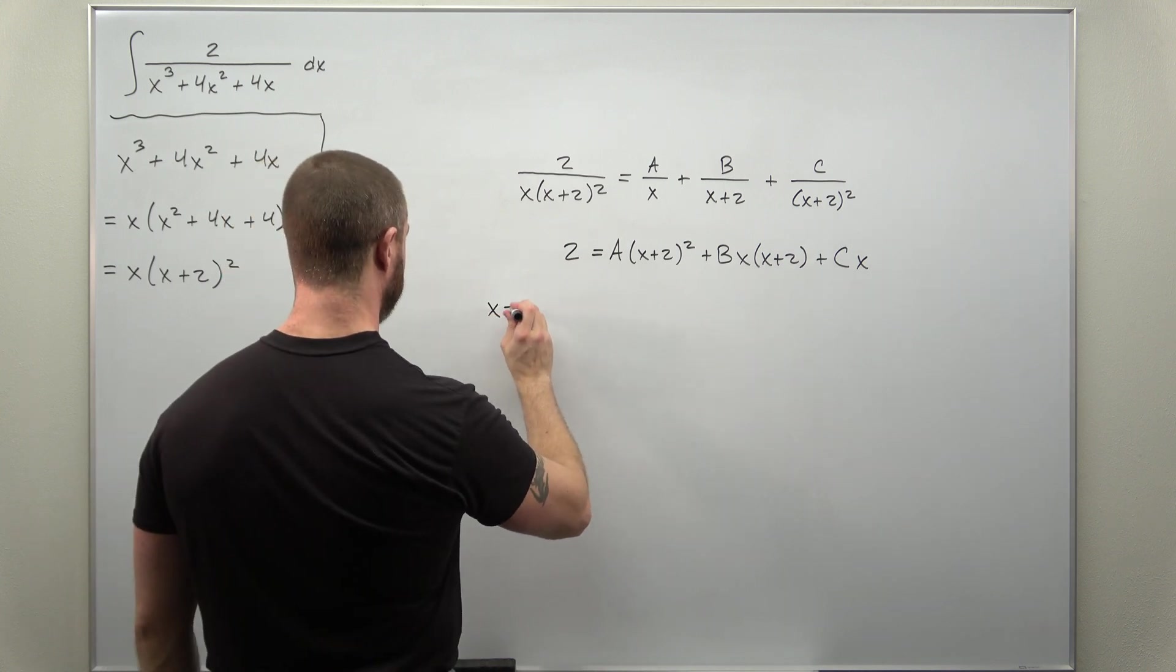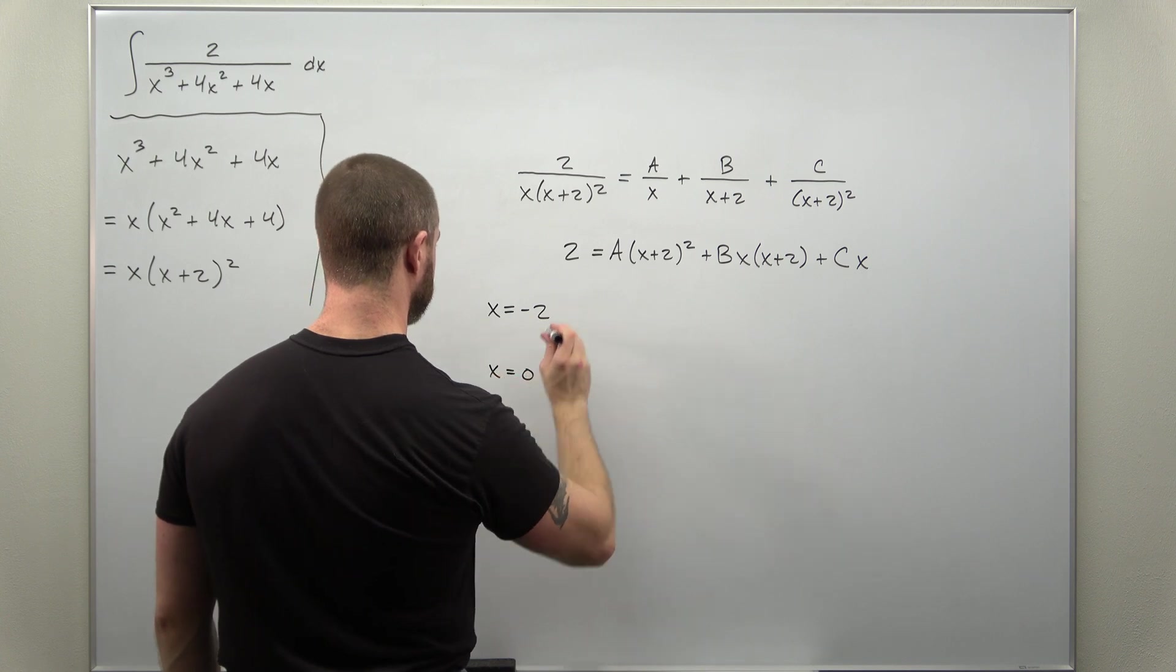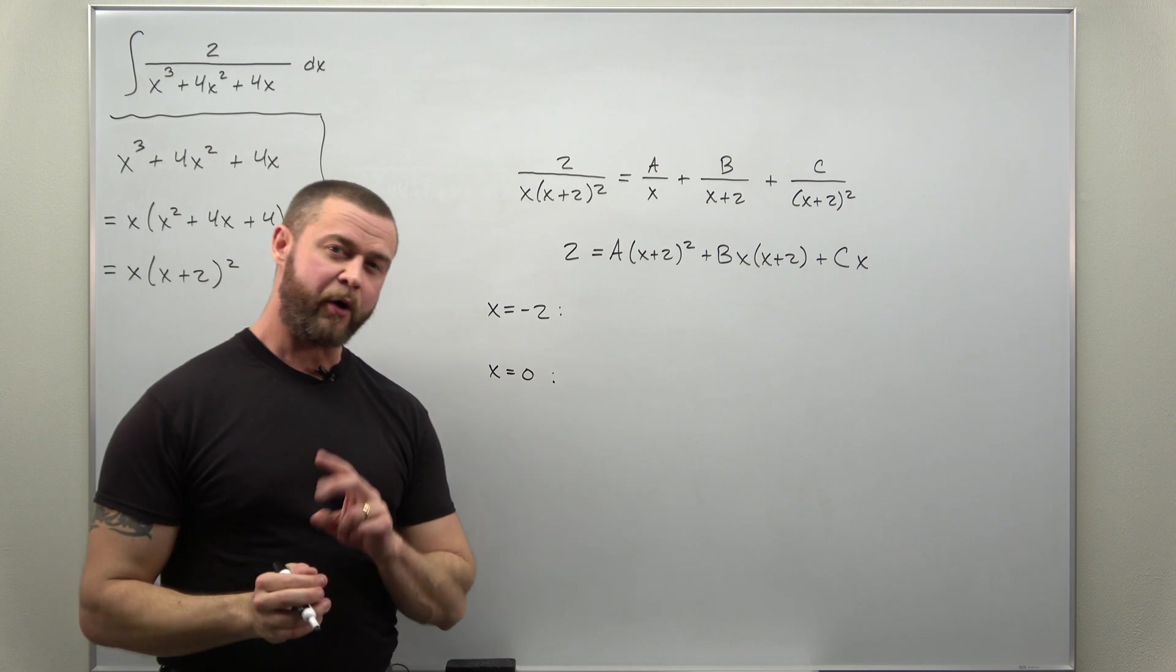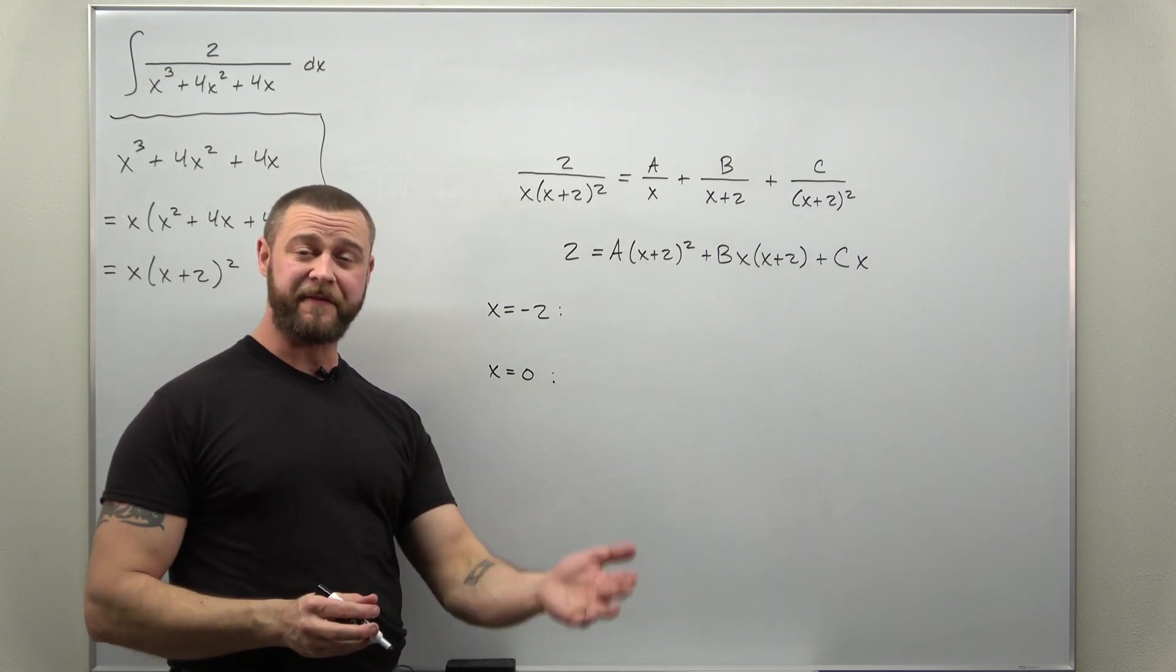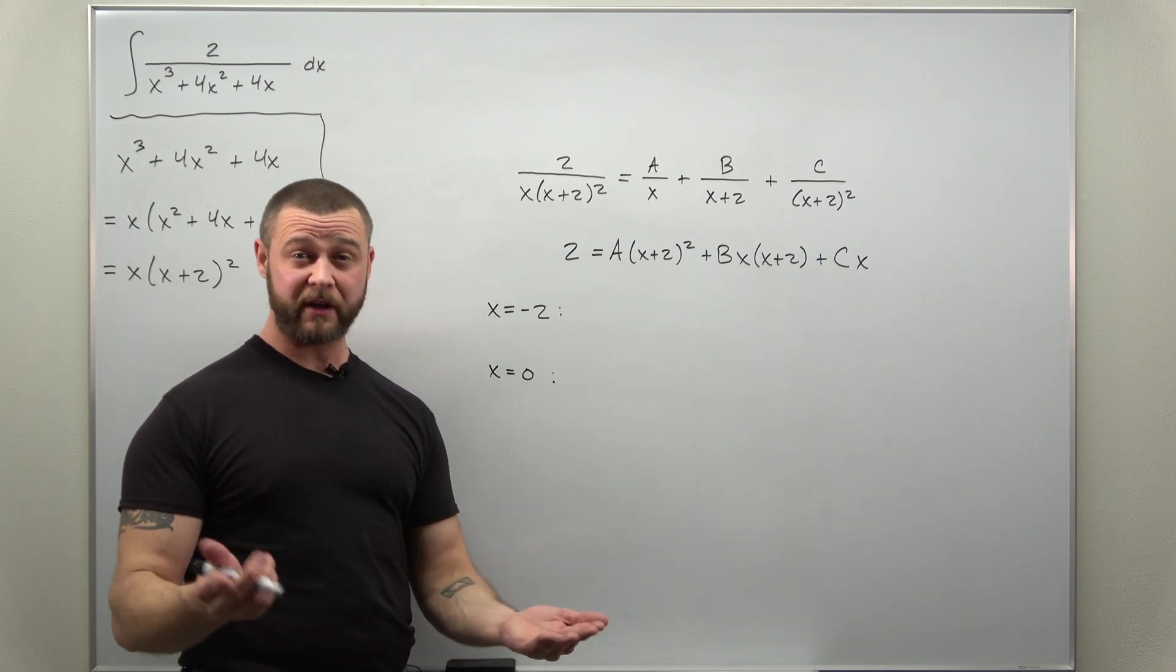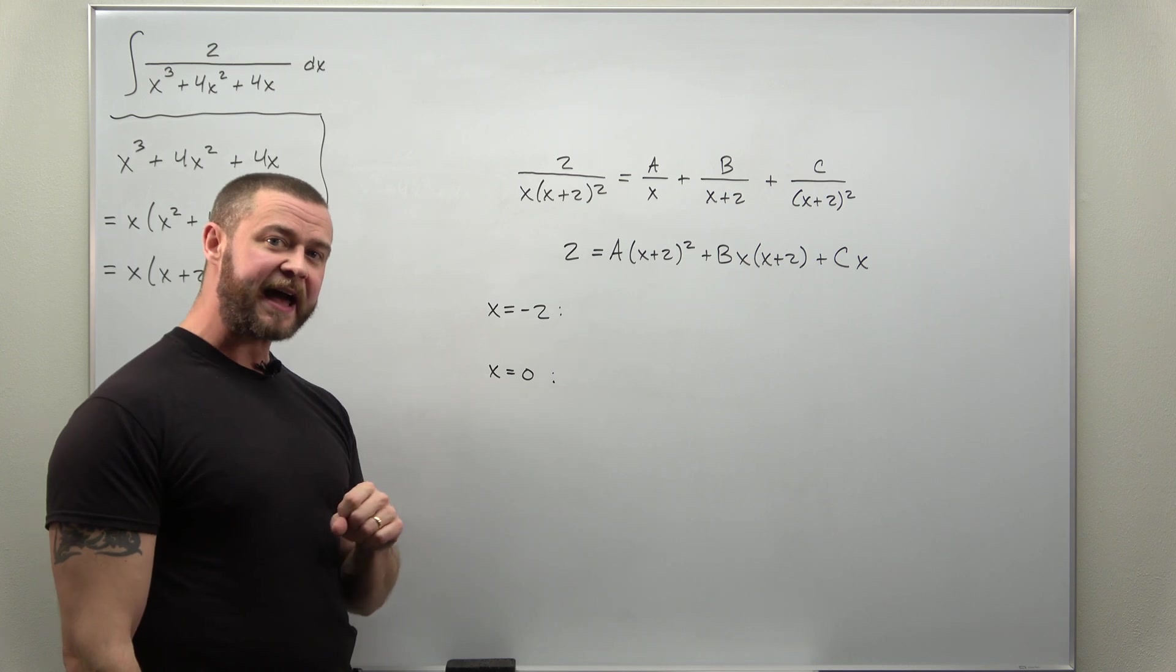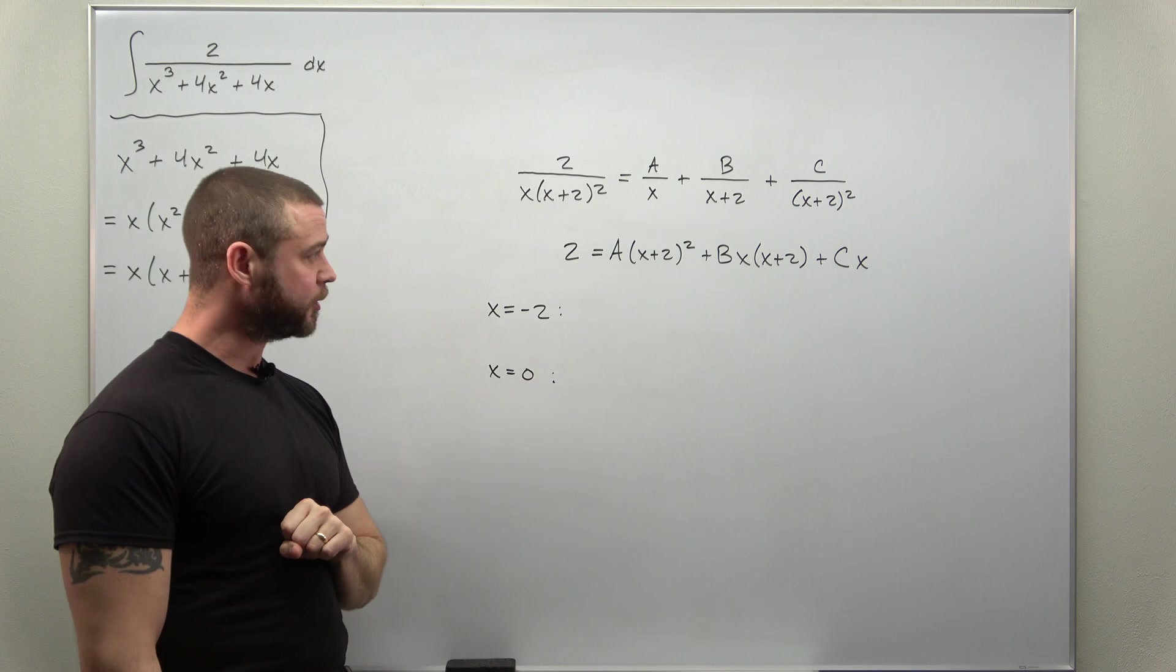So two of our values will be negative 2 and zero. Now our third value of x can be anything, could be 1, could be 5, could be 100 if you're crazy, but let's be smart about it. We want to choose x so that way all the calculations here are as simple as possible.